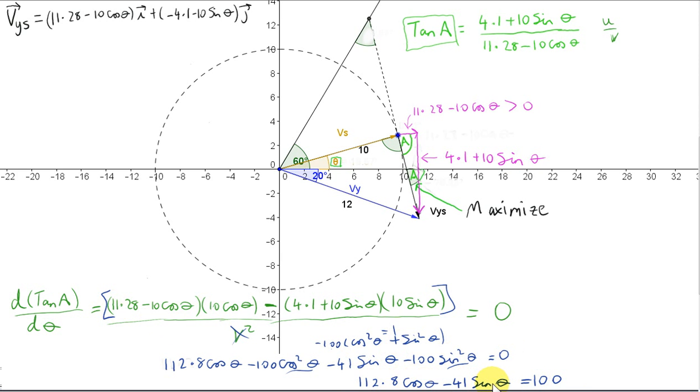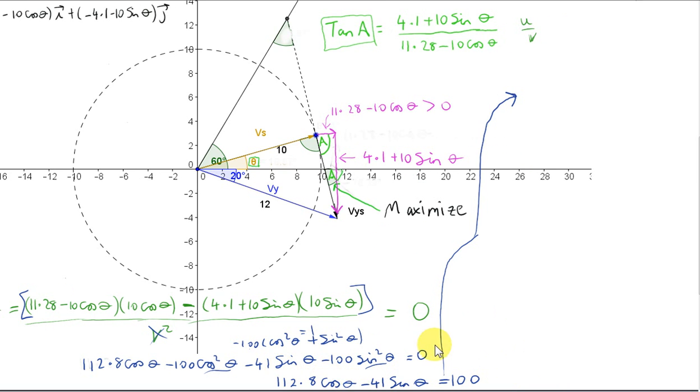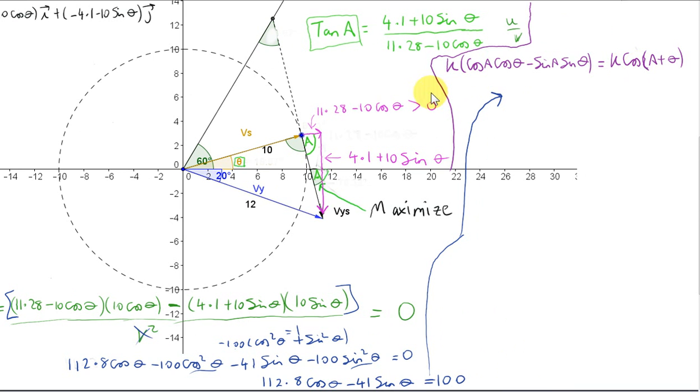So now we have to solve this equation for theta. You can see already that the calculus method is quite complicated. Now, how do we solve this? Well, one way to do it is to use an identity. Here is the identity that I will use. Now, the thing inside the bracket should be familiar. In tables, it's usually written cos A cos B minus sine A sine B. But you can see B has been replaced with theta. And on the right-hand side, we have cos(A plus B), where B has been replaced by theta. So that's a well-known identity. Now, I've multiplied both sides by K.